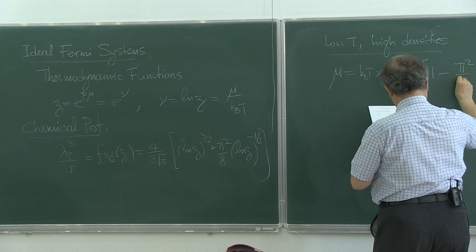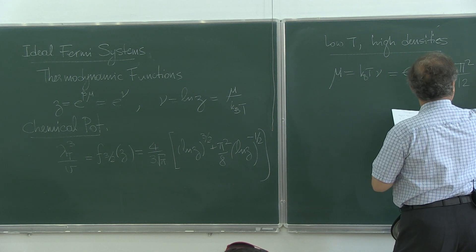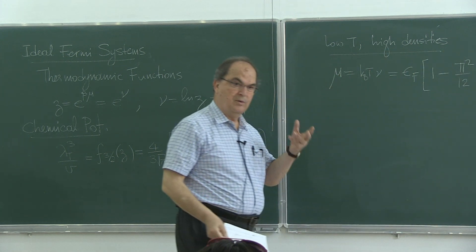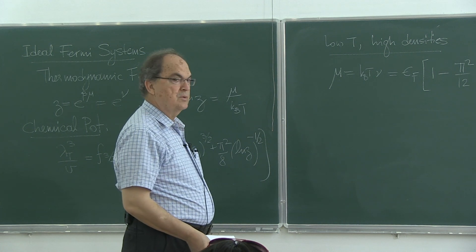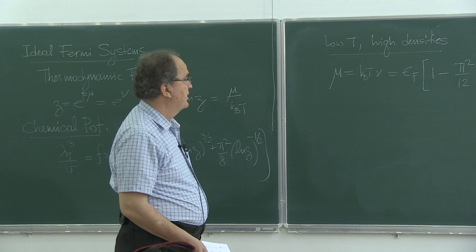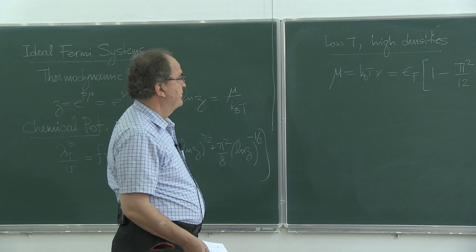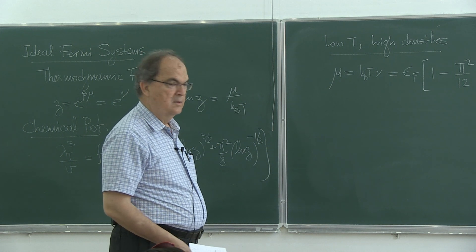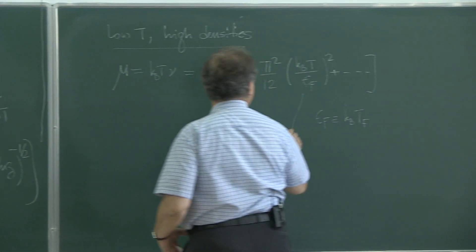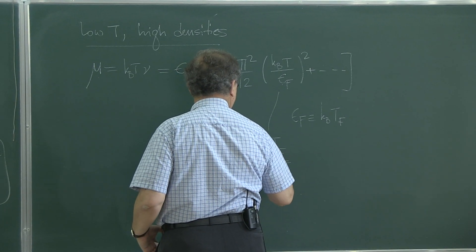Pi squared over 12 kB T over eF squared. So, you have a correction. So, at T equals zero, chemical potential becomes the Fermi energy. All the corrections are zero in that limit. But the first correction goes like T squared. So, we can relate this Fermi energy to Fermi temperature by defining this as kB TF, isn't it? It's an energy. So, that thing becomes T over TF, kB T will cancel.